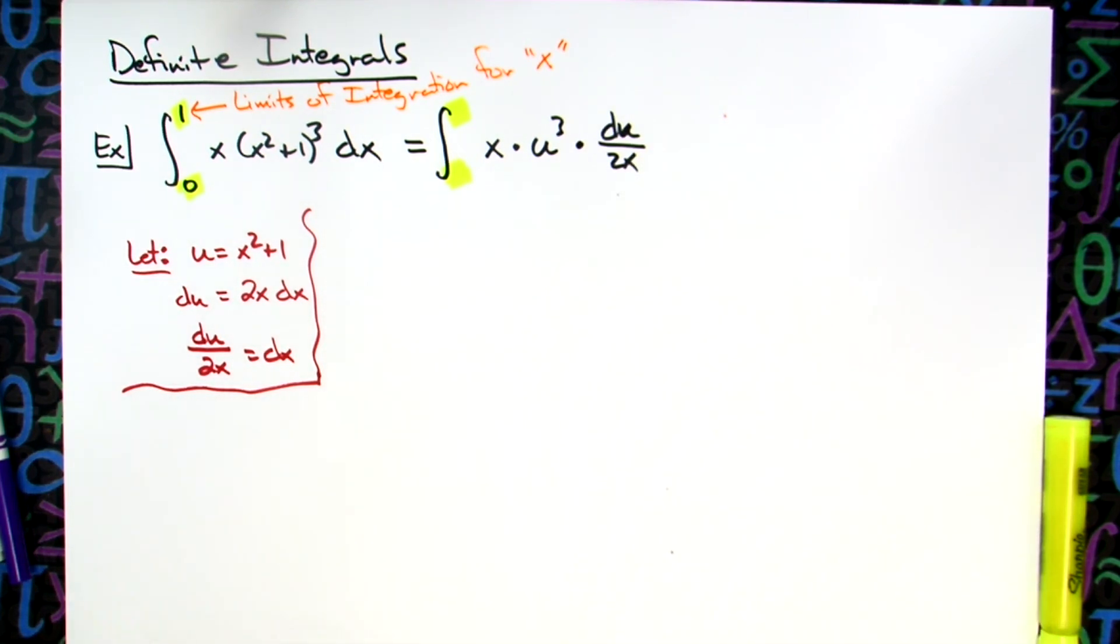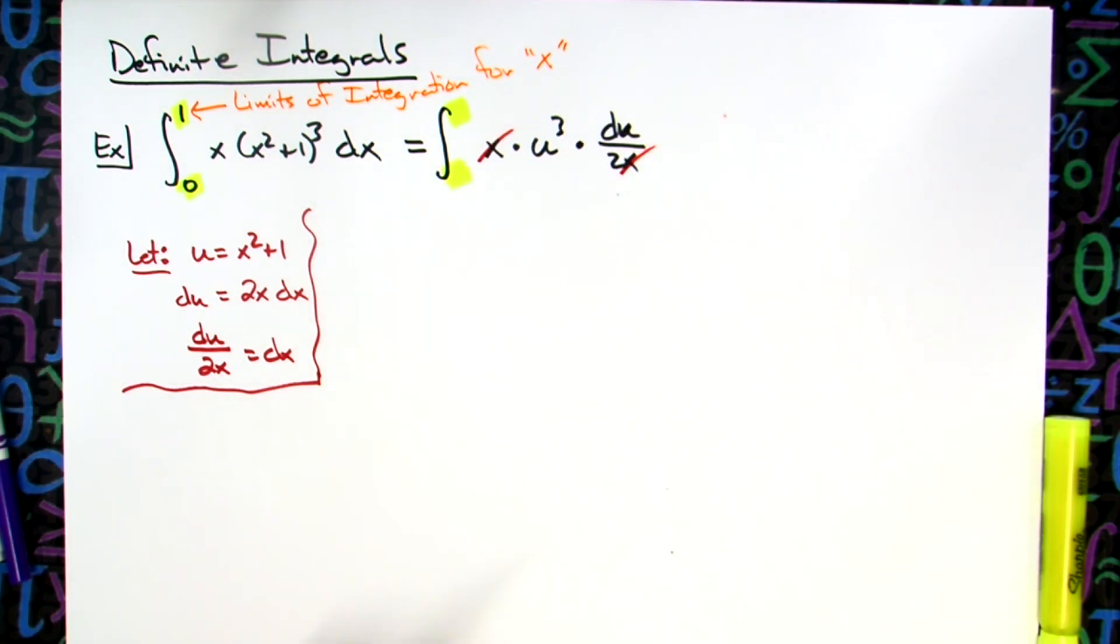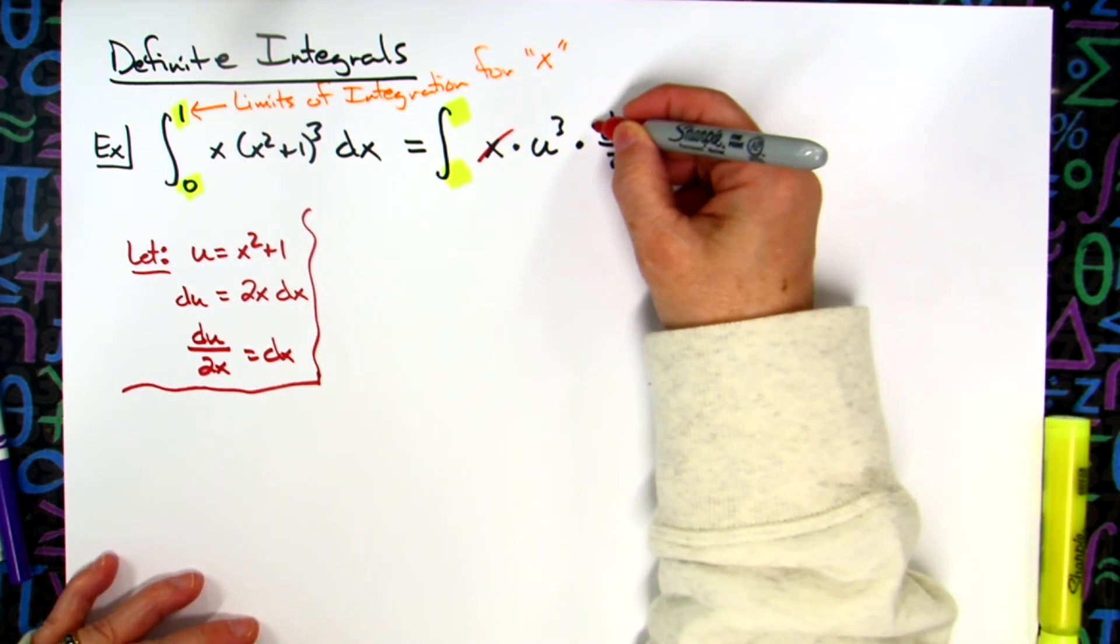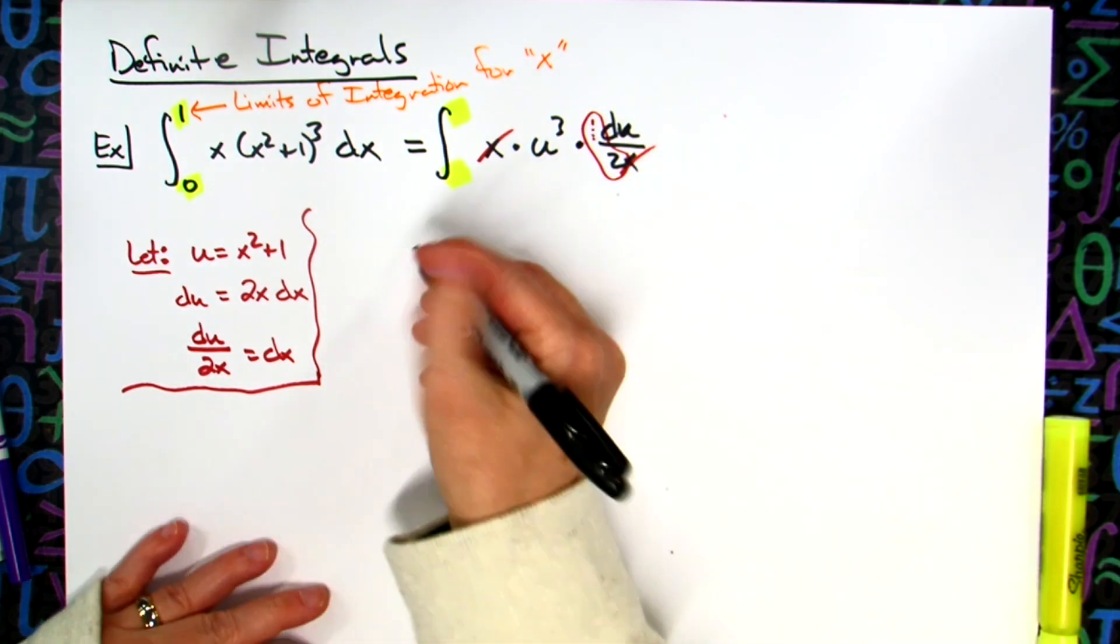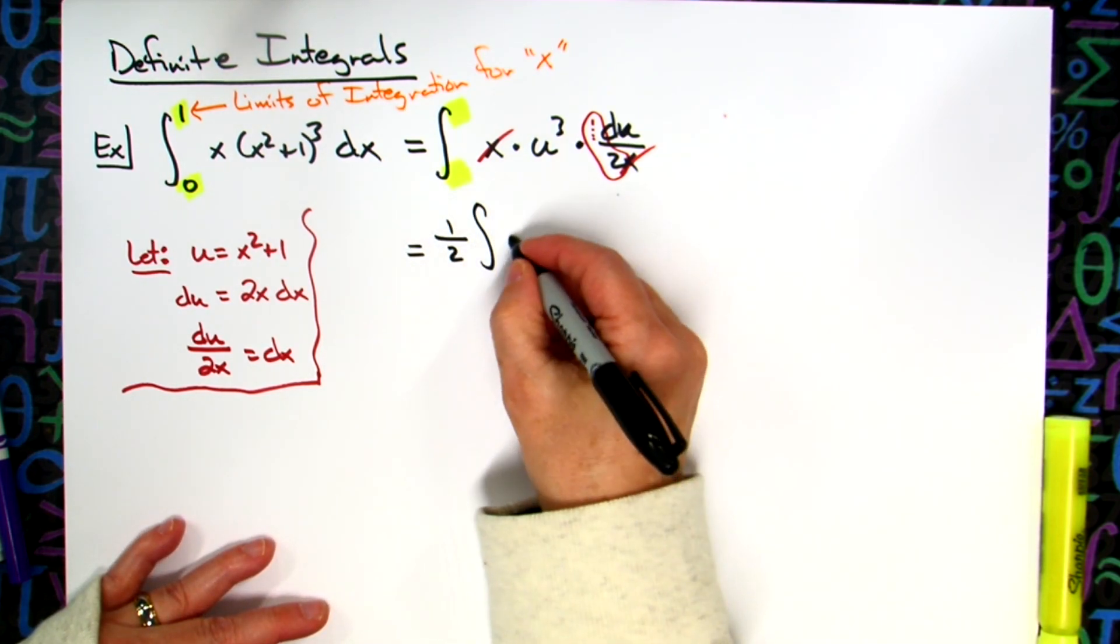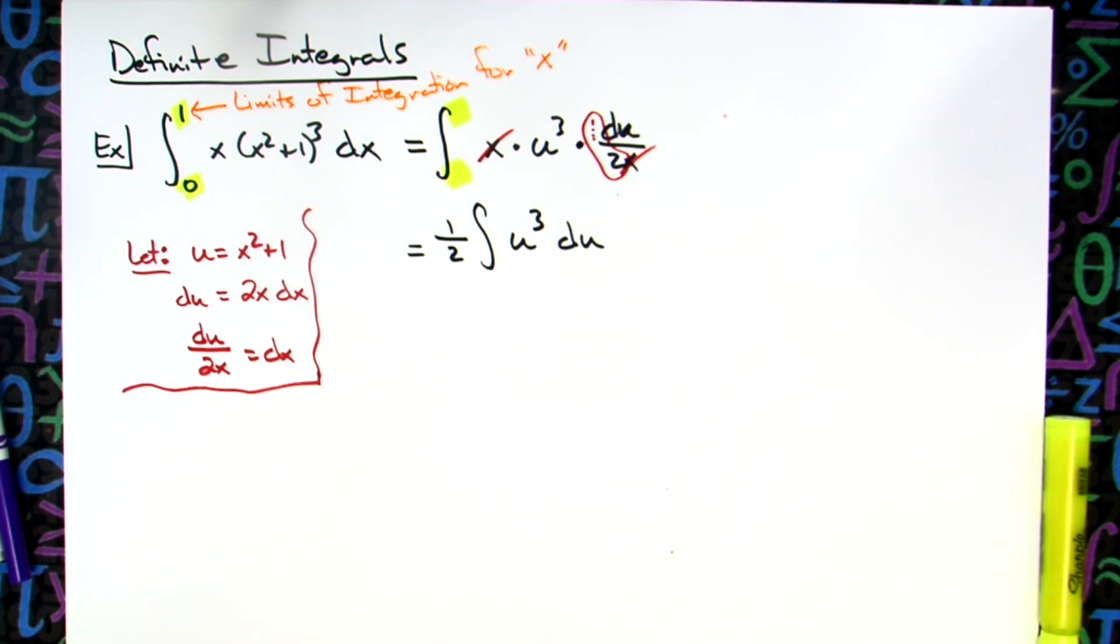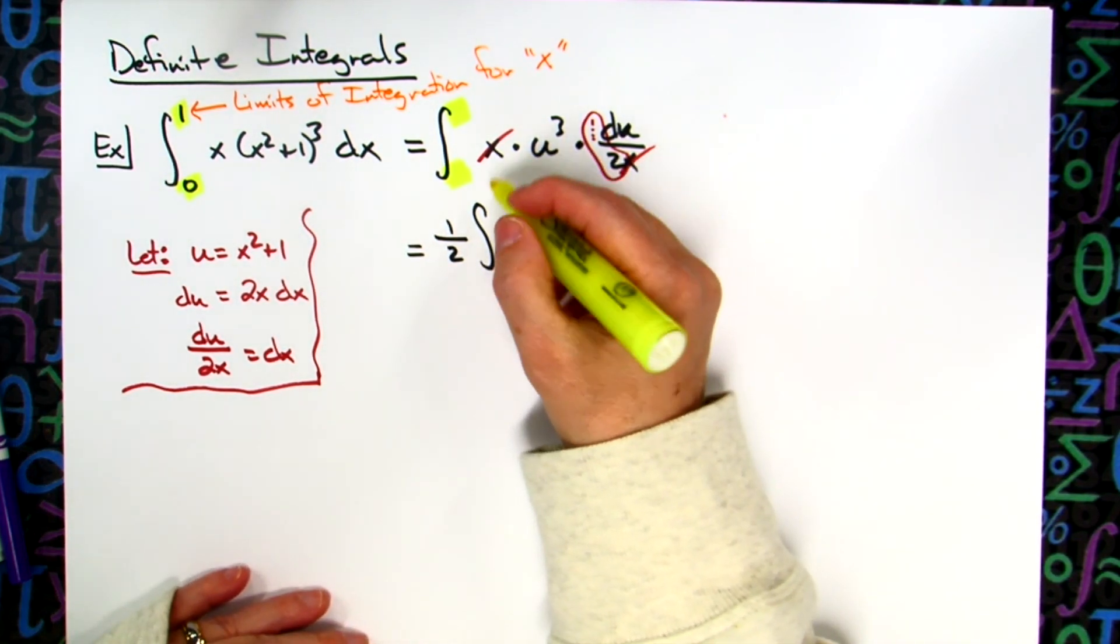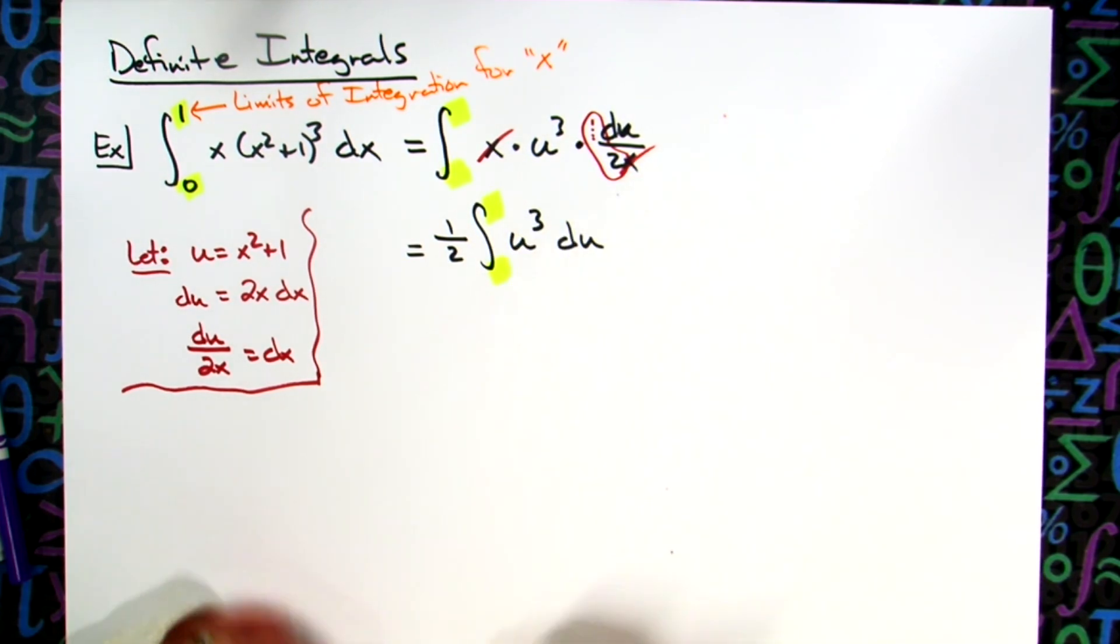At this point, I have a jumbled mess. I don't have an equation in terms of anything really. I've got u's, I've got x's, but you cannot put your limits of integration for x here because you don't have an entire equation written in terms of x. Now we're going to cross out our x's and pull out that one half out in front.